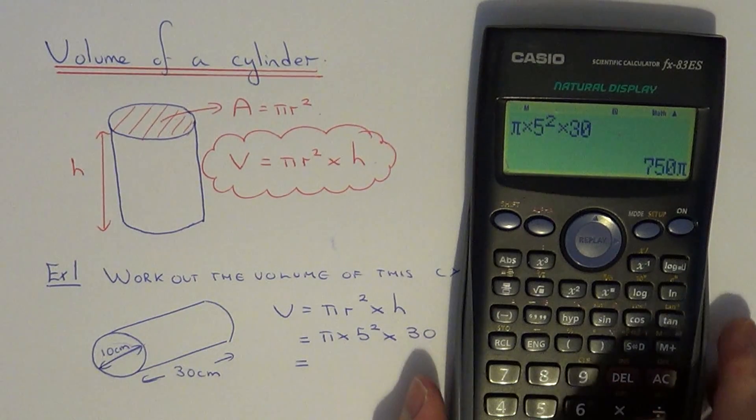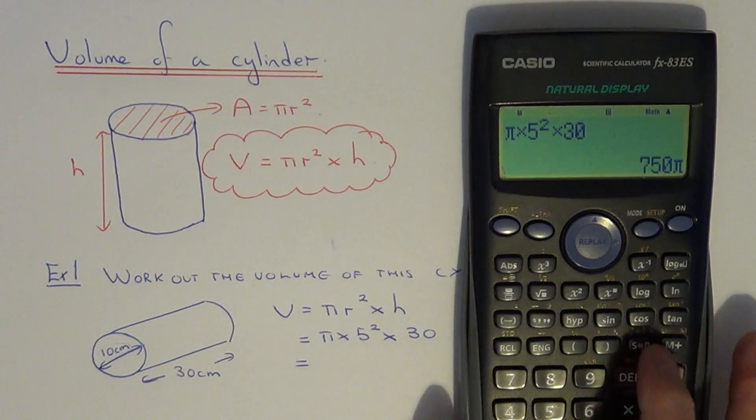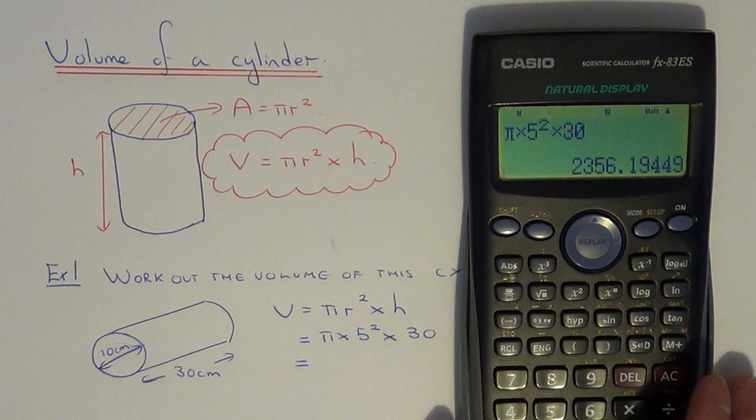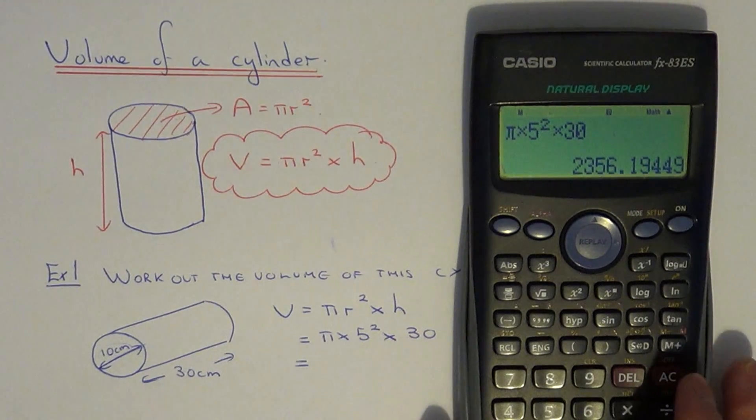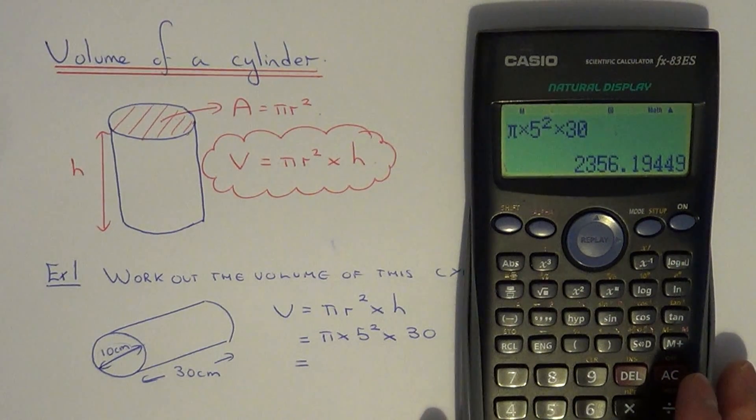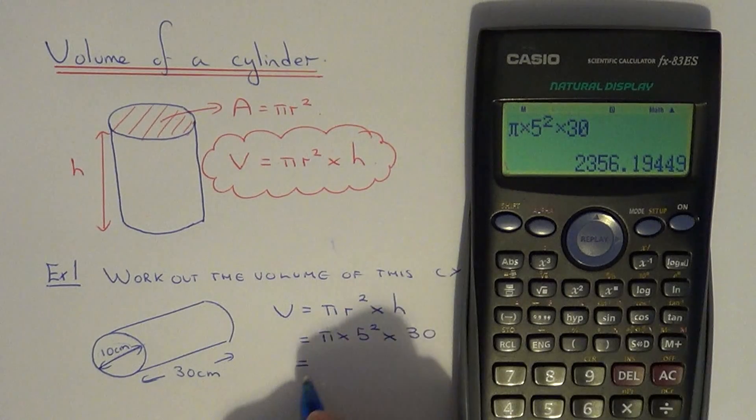So as an exact answer we get 750 pi, but let's write it down to one decimal place. So our volume will be 2356.2.